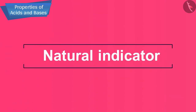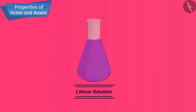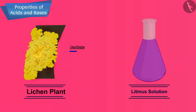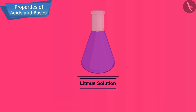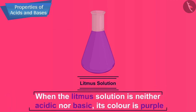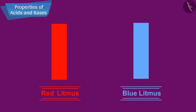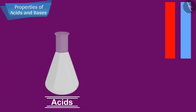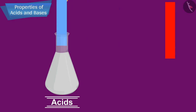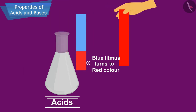Let us talk about the first natural indicator, which is litmus. Litmus solution is a purple dye which is extracted from lichen, a plant belonging to the division Thallophyta, and is commonly used as an indicator. When the litmus solution is neither acidic nor basic, its colour is purple. It is now available in two forms: red and blue litmus. Acids, which are sour in taste, turn blue litmus to red colour, and there is no change in colour in case of red litmus.